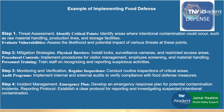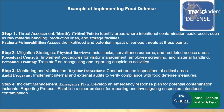Implementing food defense: step one, threat assessment — identify critical points where intentional contamination could occur, such as raw material handling, production lines, and storage facilities. Evaluate vulnerabilities by assessing the likelihood and potential impact of various threats. Step two, mitigation strategies — install locks, surveillance cameras, and restricted access areas as physical barriers. Implement procedural controls for visitor management, employee screening, and material handling. Train staff on recognizing and reporting suspicious activities.